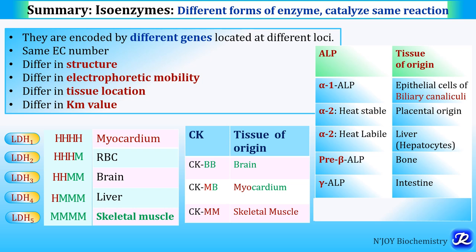Gamma alkaline phosphatase, present in the intestine, is increased in ulcerative colitis. Leukocyte-associated alkaline phosphatase is increased in lymphoma and decreased in chronic myeloid leukemia.